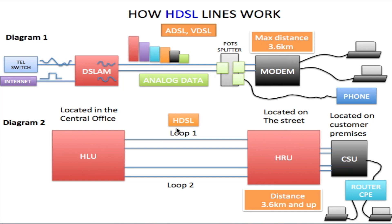For an HDSL line, you have two pairs of wires connecting an HLU in the central office to an HRU on the street. HLU stands for HDSL Line Unit and HRU stands for HDSL Remote Unit. The HRU is connected to a CSU located at the customer's premises. The CSU acts as an interface between the HRU and the router at the customer's premises.